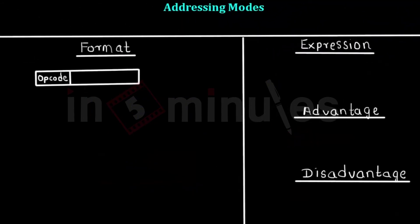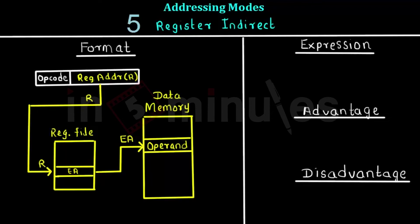Now let's look at the next addressing mode: register indirect addressing mode. In this mode, the register contains the address of the operand from memory, and the address of this register is given in the operand field. Let's look at the execution — we are using both the register file and data memory here, and the register address is provided.